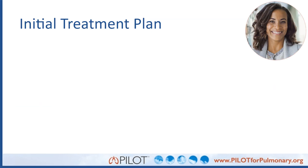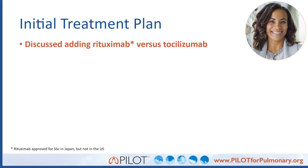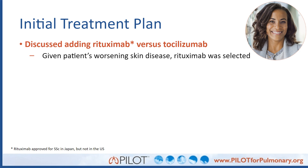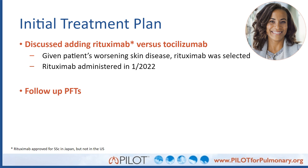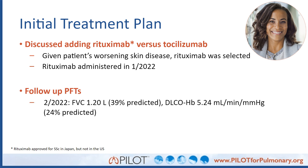Despite treatment with mycophenolate, this patient was still experiencing progression of her ILD. Given her elevated inflammatory markers, we discussed escalating immune therapy — specifically rituximab versus tocilizumab. We ultimately decided together that rituximab was a better choice, in part because her skin disease was worsening and studies have demonstrated rituximab can improve skin disease in diffuse scleroderma. She started rituximab in January 2022, and follow-up PFTs a month later showed stability in her FVC and DLCO. She has since had continued improvement in skin disease and stability in pulmonary function.